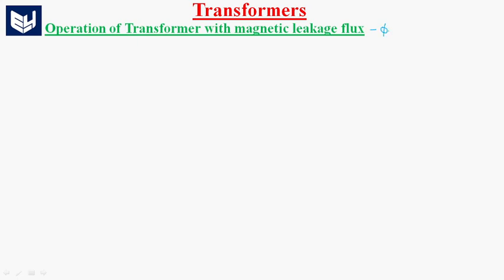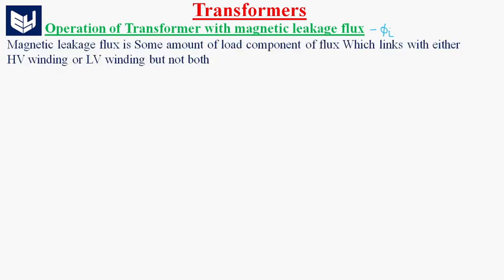Hi guys, today we are going to learn about operation of a transformer with magnetic leakage flux. Let us consider phi L is the leakage flux. Magnetic leakage flux is some amount of load component of flux which links with either the HV winding or the LV winding, but not both the windings.